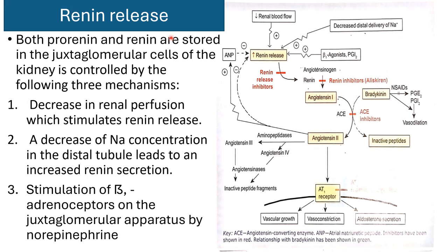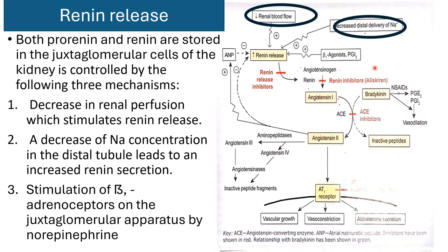We have already discussed the release of renin. Renin and pro-renin are stored in the juxtaglomerular apparatus and it is controlled by either decreased renal blood flow, decreased sodium concentration in the distal convoluted tubule, or beta-1 receptor stimulation at the juxtaglomerular apparatus, causing increased release of renin from the kidney.